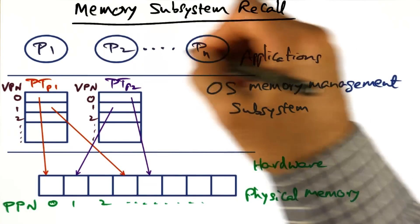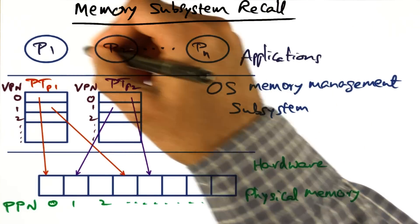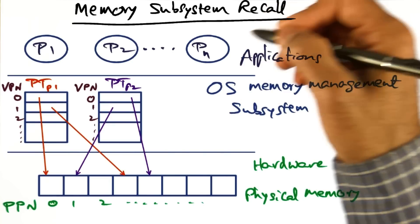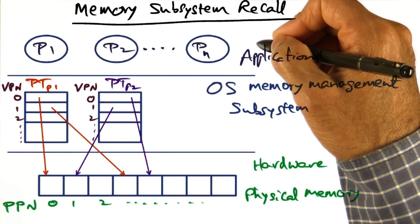Recall that in any modern operating system, each process is in its own protection domain and usually a separate hardware address space.